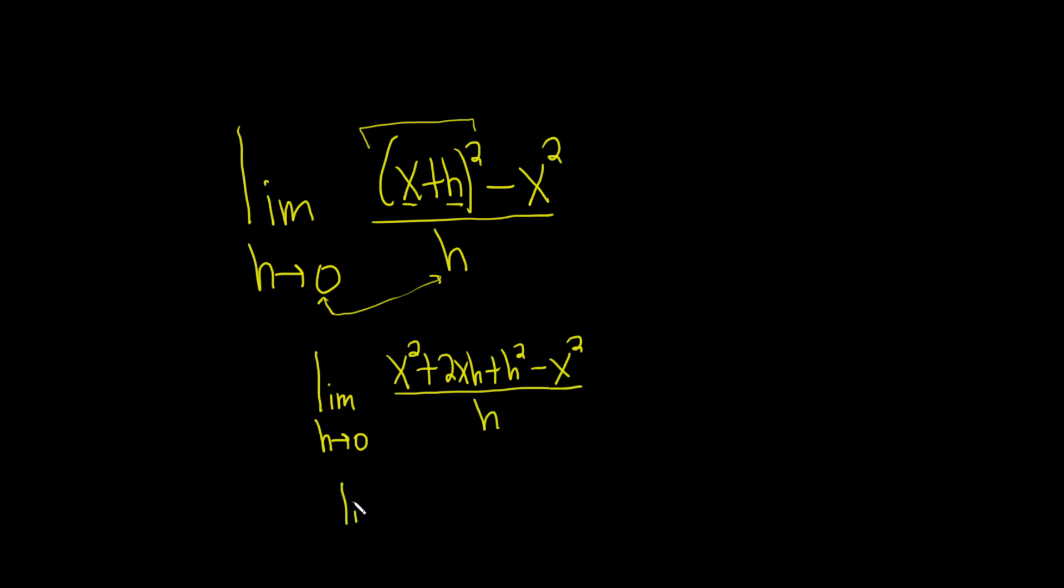So this is the limit as h approaches zero. Let's see, looks like the x squareds cancel. So we have 2xh plus h squared all divided by h. Good stuff.